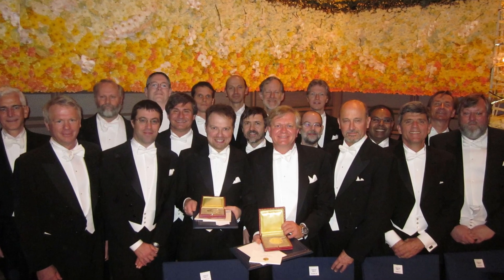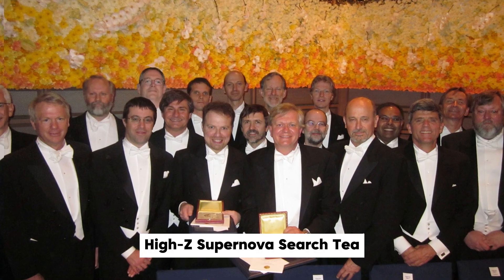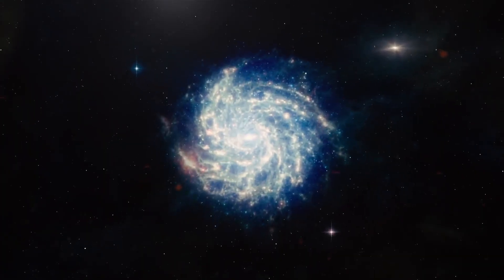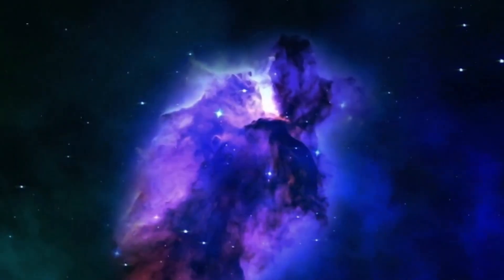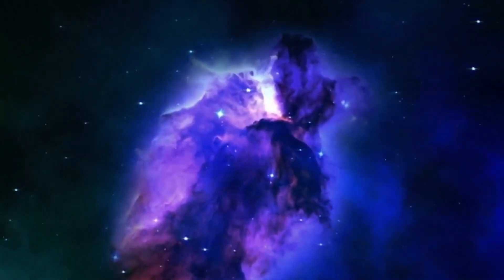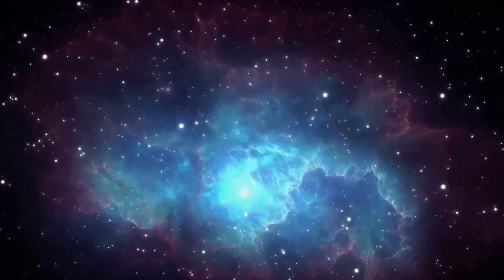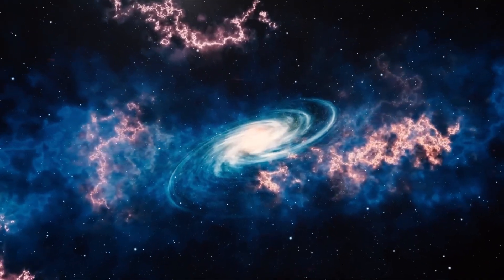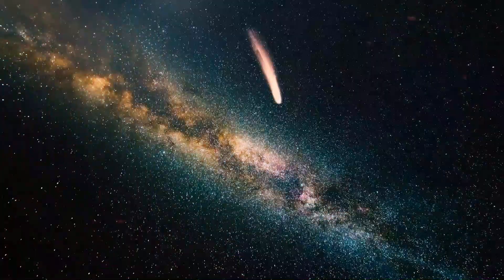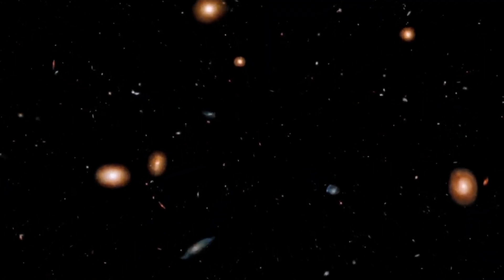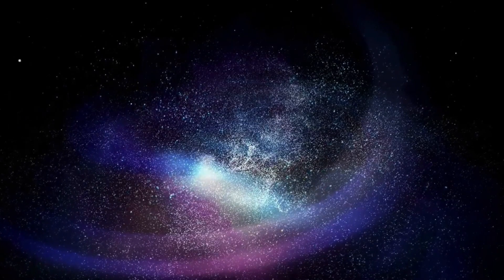Schmidt and Riess are both part of the Hi-Z Supernova Search Team, which is looking into ways to improve how far things can be measured in the universe. As part of the Supernova Cosmology Project, Perlmutter, on the other hand, came to the same results around the same time. They saw Type Ia Supernovae, which are very bright stars that explode and are a good way to figure out how far away things are in the universe.